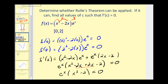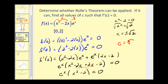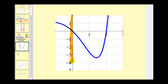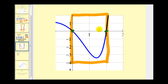Isolating x squared and taking the square root of both sides gives x equals plus or minus the square root of two. Negative square root of two is not in the interval from zero to two, so the value of c is positive square root of two. Checking graphically: on the interval from zero to two, f of a equals f of b, and at x equals square root of two we have a horizontal tangent line, meaning the derivative equals zero.